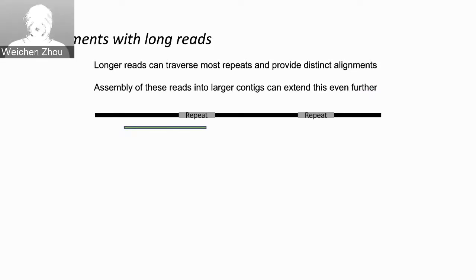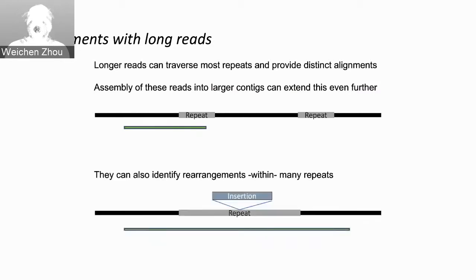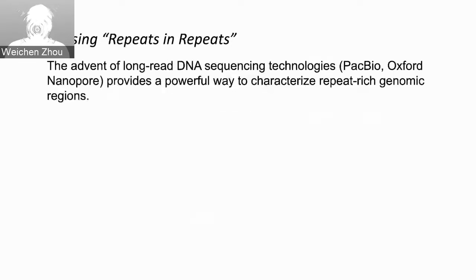When we do alignment with long reads, longer reads can traverse most repeats and provide distinct alignments. By assembling those reads into larger context, we can extend this further and identify rearrangements or genetic events within those kinds of repeats. As we have more and more long read sequencing data, they give us a powerful way to investigate repeat-rich genomic regions.